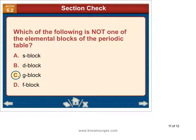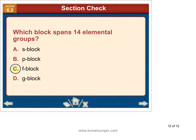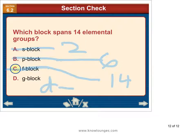Which is not one of the blocks of the periodic table? Currently, there is no G block. Maybe someday there will be. F block has 14 elements. S block has two elements, P block has six elements, F block has 14 elements, and the one they didn't list, the D block, has 10 elements.